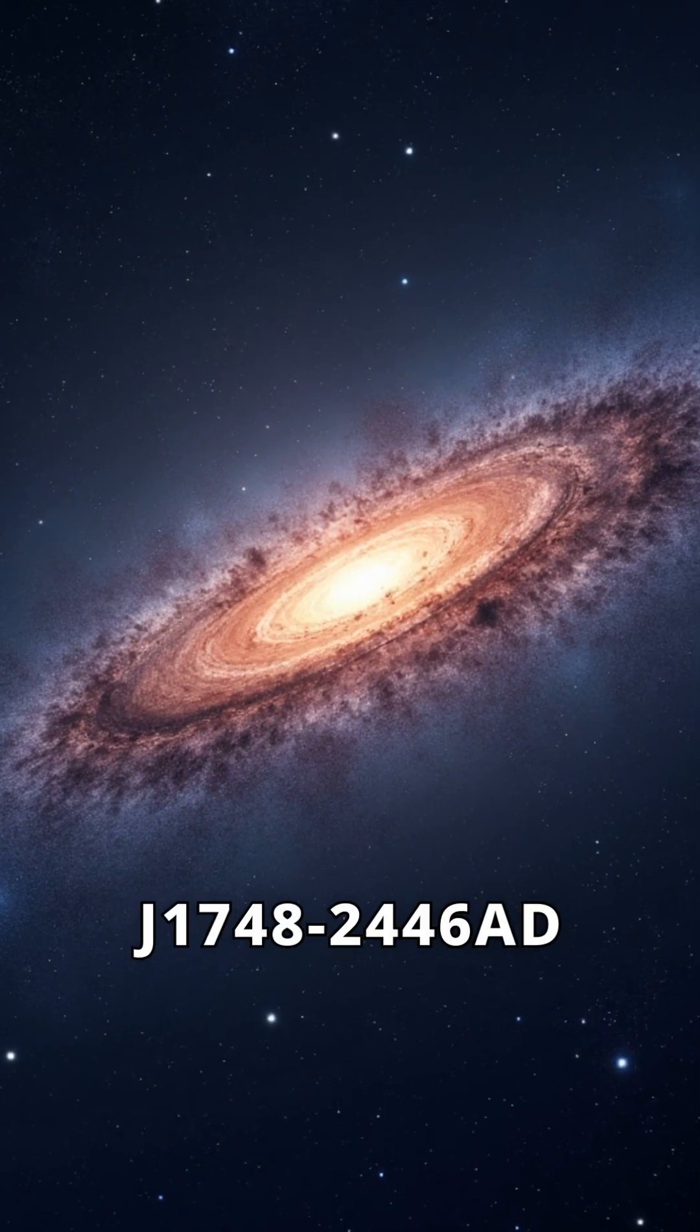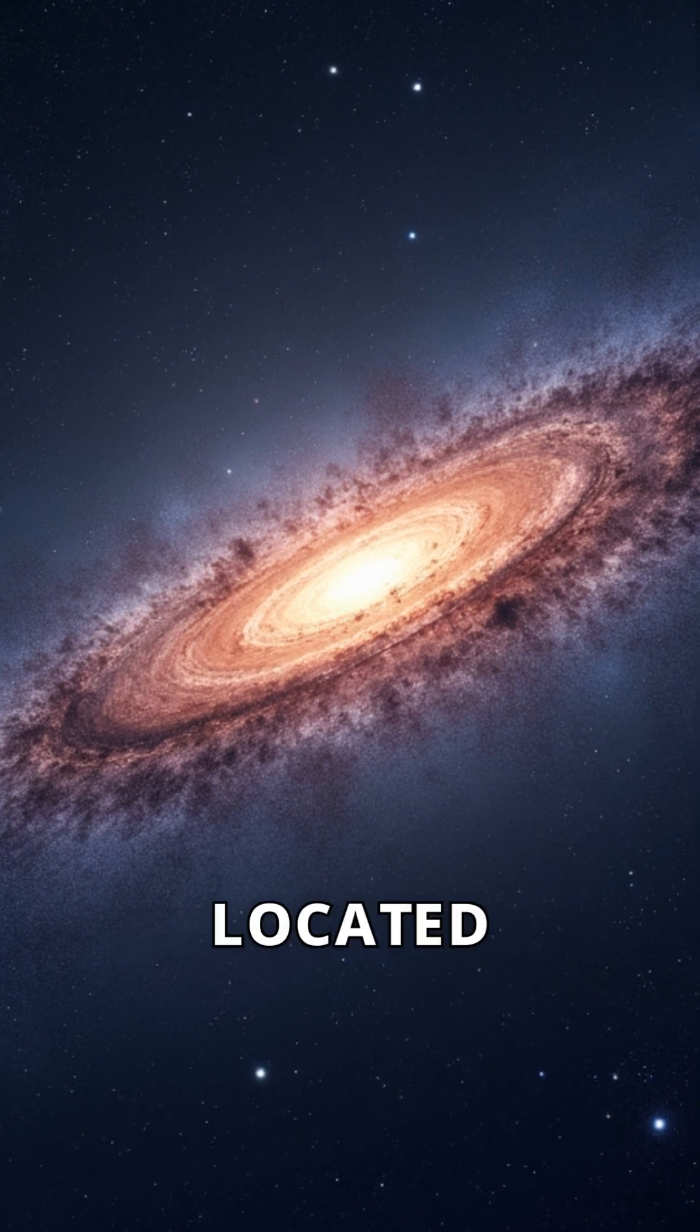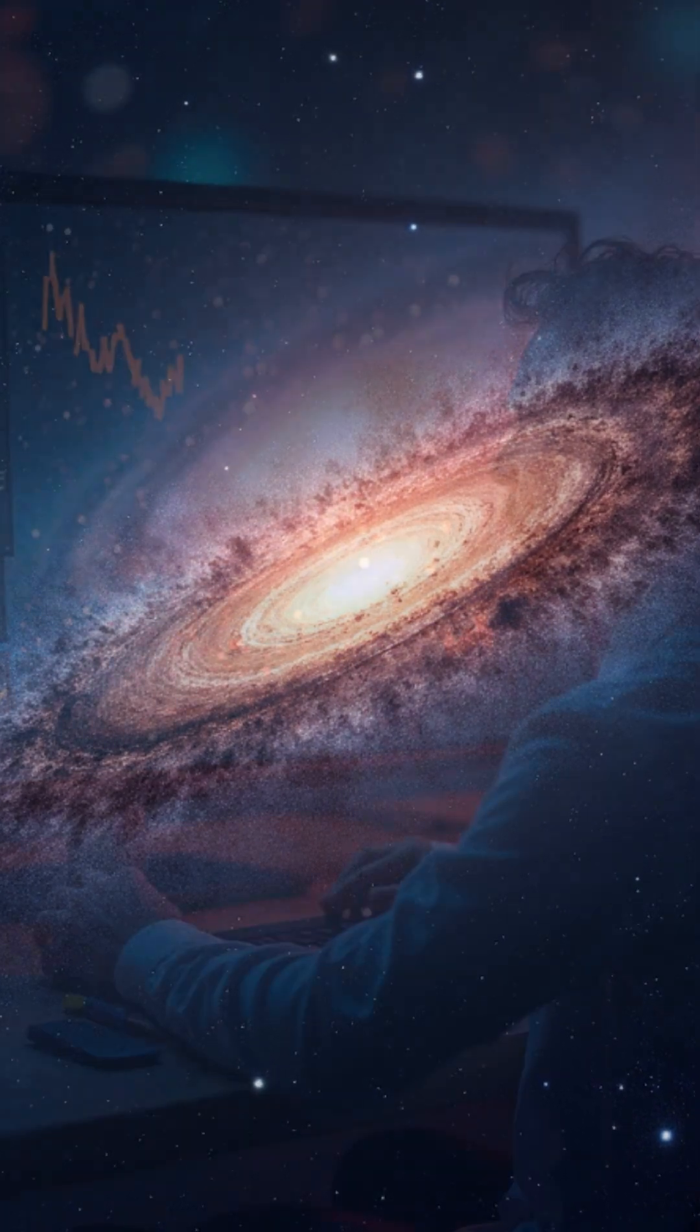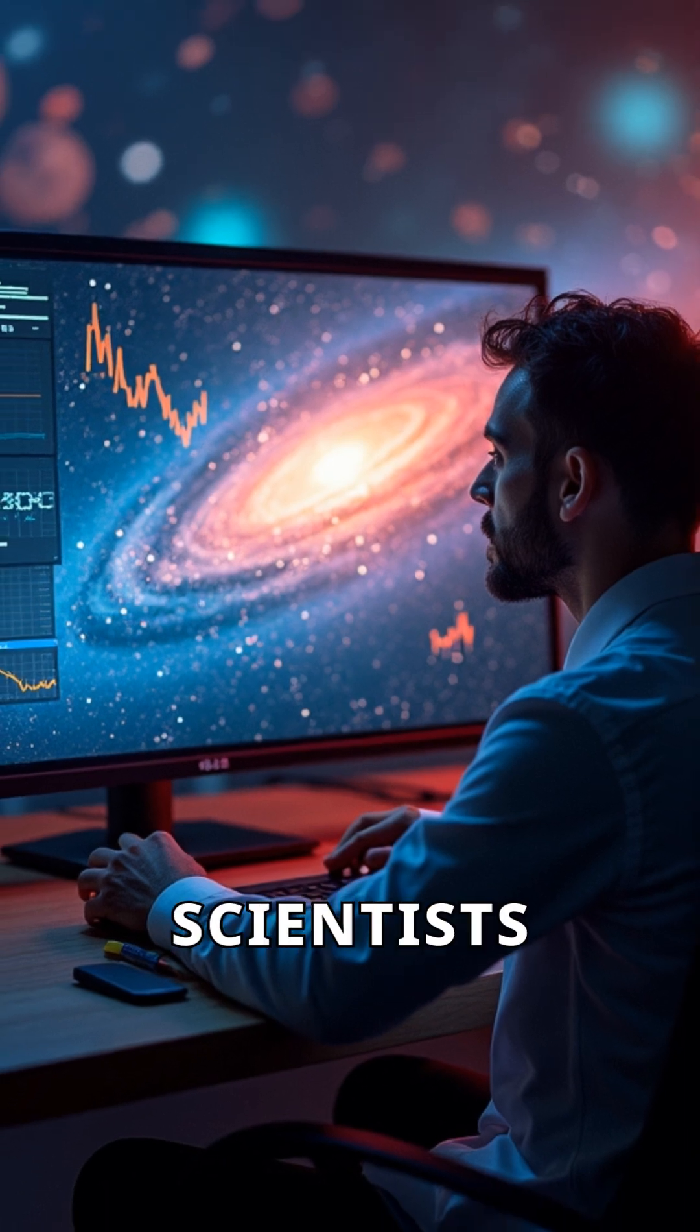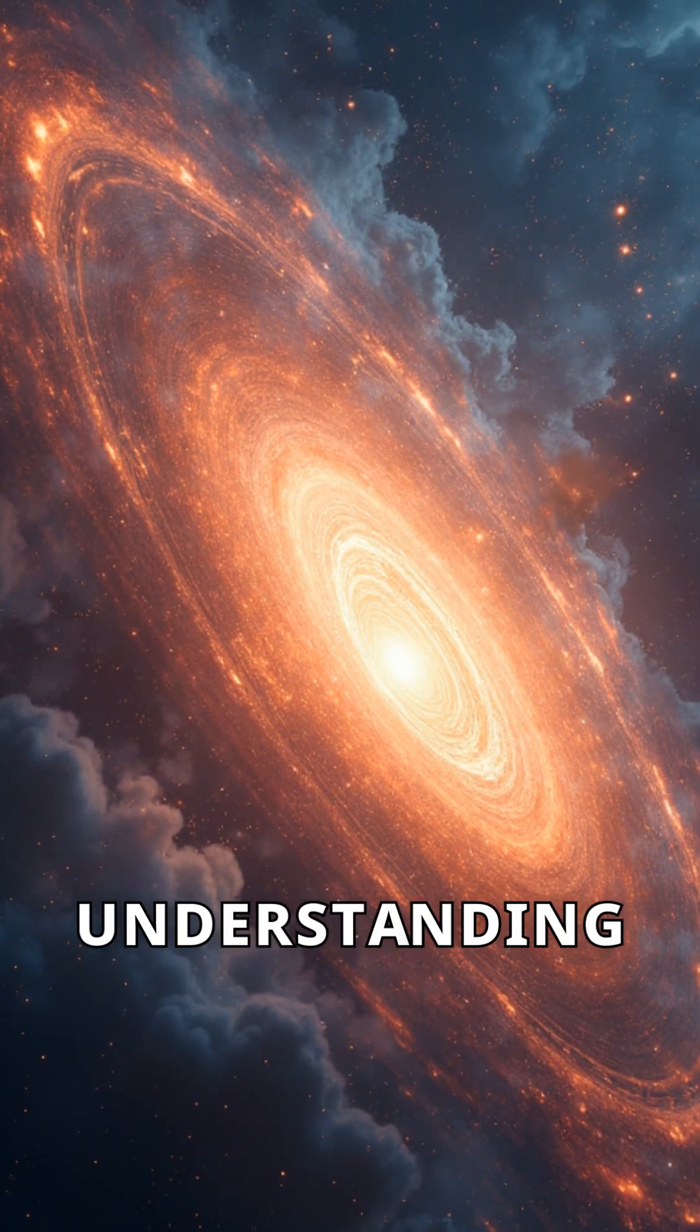PSR J1748-2446AD is located in our Milky Way galaxy. Its rapid spin helps scientists study extreme physics. This pulsar challenges our understanding of gravity and time.